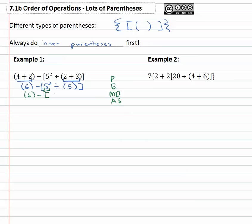So we have 6 - [25 ÷ 5]. And then still inside that parentheses, we've got 25 ÷ 5. So now we have 6 - 5 and finally at the end we get to the subtracting where 6 - 5 is 1.